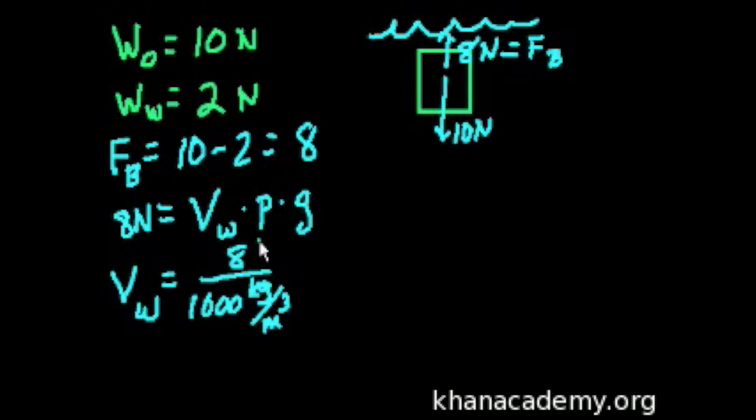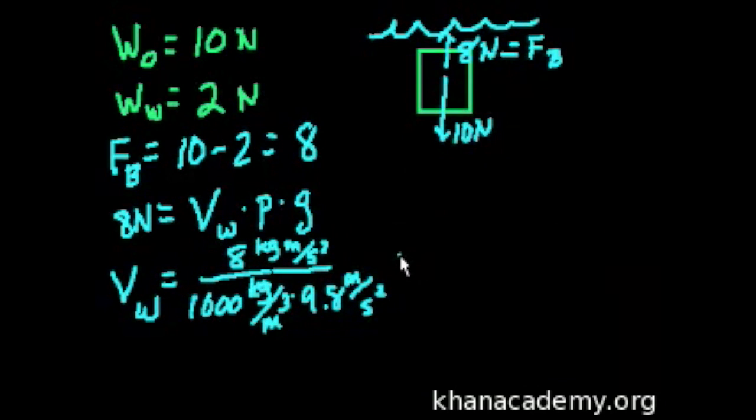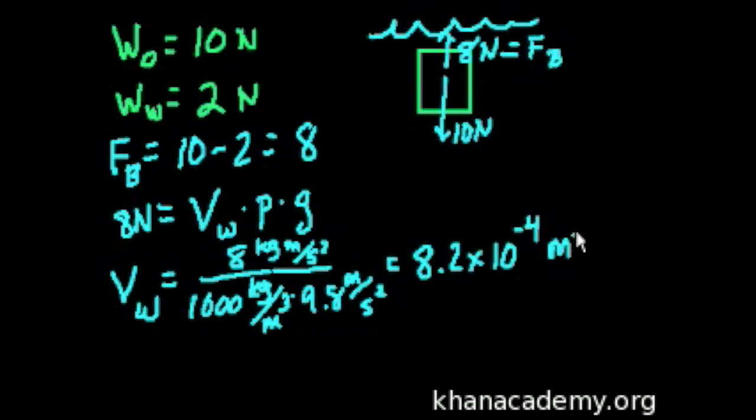So what is the volume of water displaced? Well, divide 8 newtons by the density of water, which is 1,000 kilograms per meter cubed. This is 8 newtons, so a newton is kilogram meter per second squared. And gravity is 9.8 meter per second squared. This equals 8.2 times 10 to the minus 4 cubic meters.